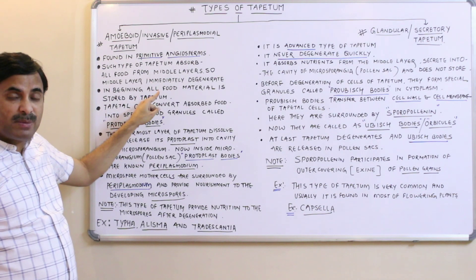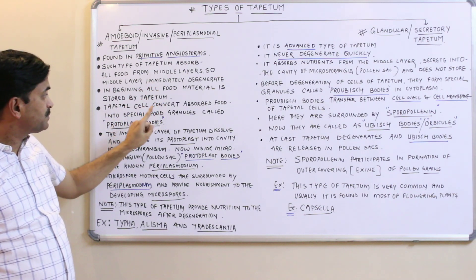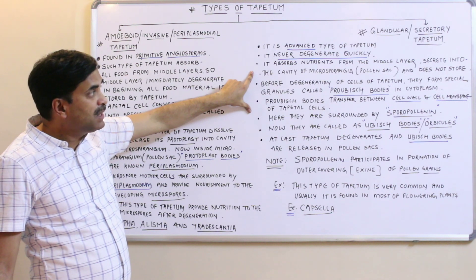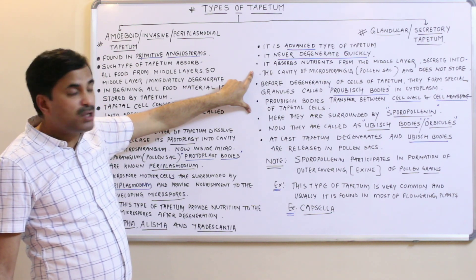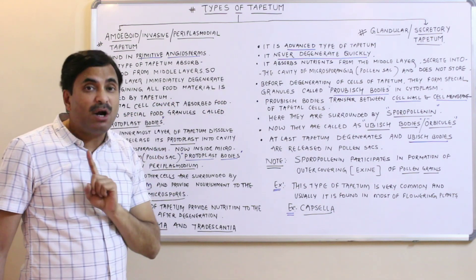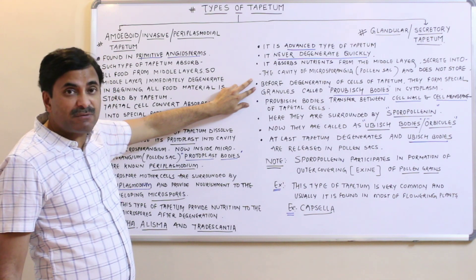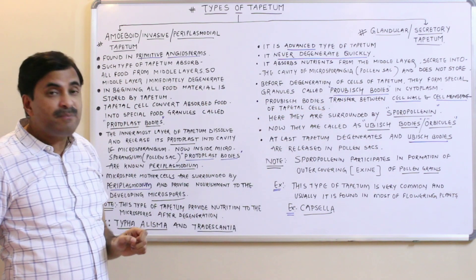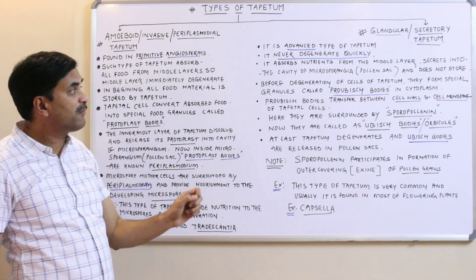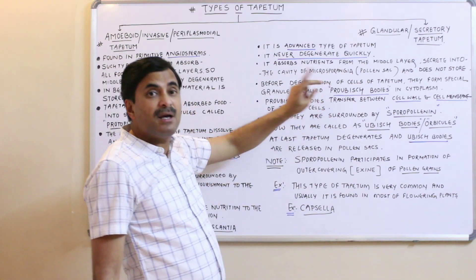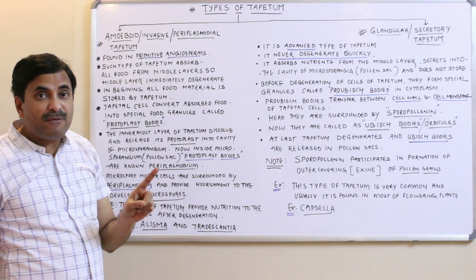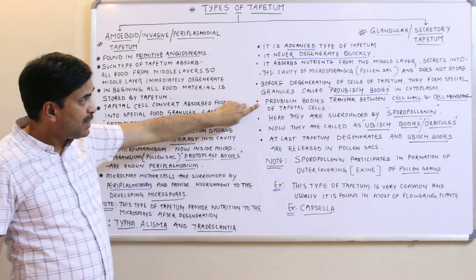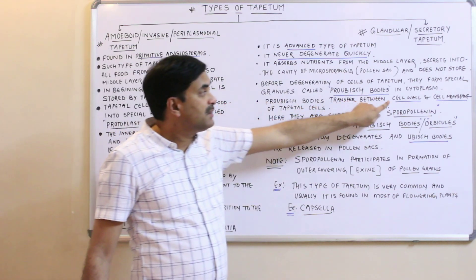The big difference here is that the food absorbed from the middle layer is not stored in the form of protoplast bodies. Instead, the nutrients absorbed by the tapetum are secreted directly into the microsporangia cavity. Before degeneration of the tapetum cells, they form special granules in their cytoplasm known as pro-Ubisch bodies.